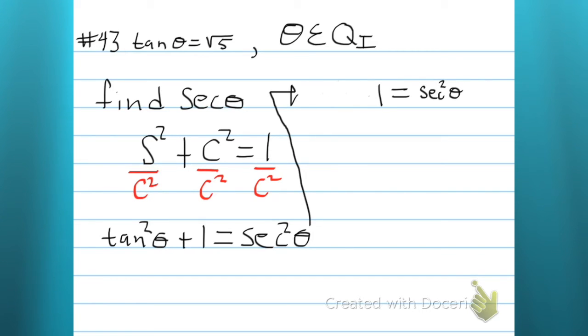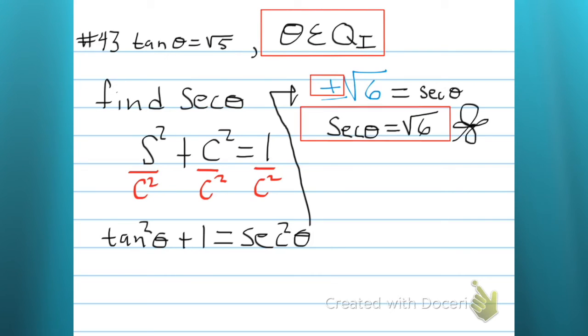The square root of five squared, that's five, and then five plus one is six. I take the square root of both sides, but I'm not going to forget the plus or minus. And now it's time to get choosy. My secant's positive in the first quadrant, and that's why I choose the plus sign for my secant, square root of six.